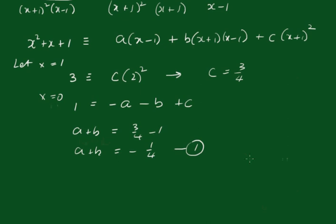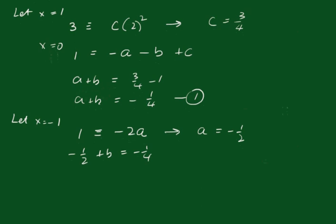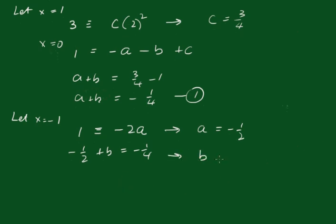Now we'll let x equal minus 1. The left hand side becomes 1, and that just becomes minus 2A, since the B and C terms vanish. So straight away we get A equals minus 1 half. Taking minus 1 half and putting that back into equation 1, we get minus 1 half plus B equals minus 1 quarter, which means B equals 1 quarter.